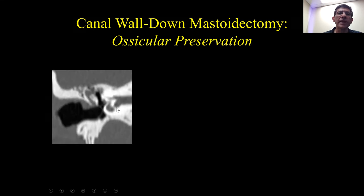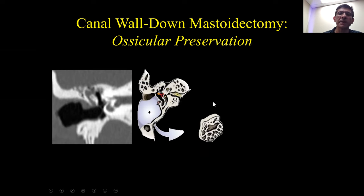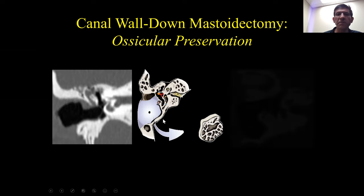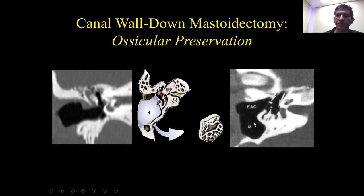For mastoidectomies that are a little more extensive but have generally not involved the ossicles, this is the type of procedure called a canal wall down mastoidectomy, where the surgeons remove the posterior external auditory canal. The posterior canal wall has been taken down, and here we see the remnant of the external auditory canal and the mastoid bowl.